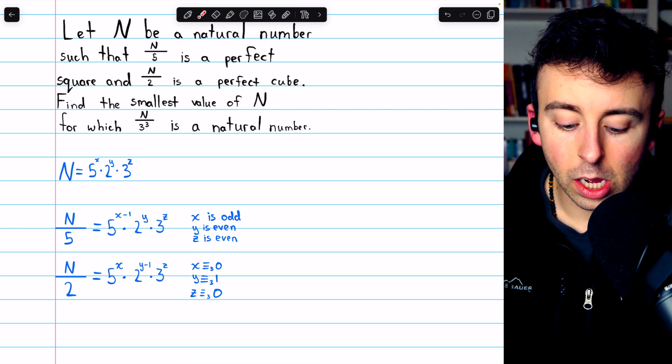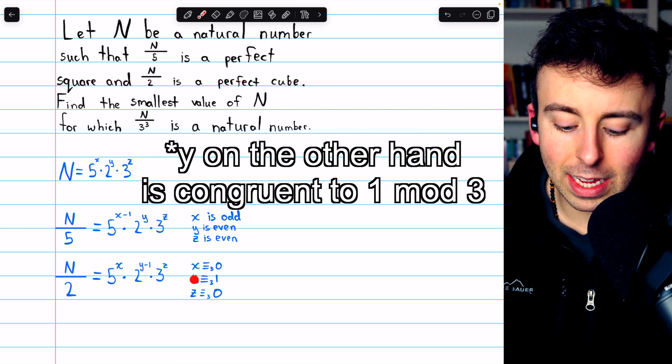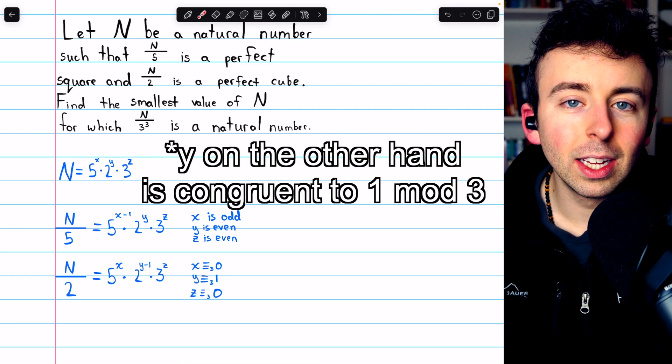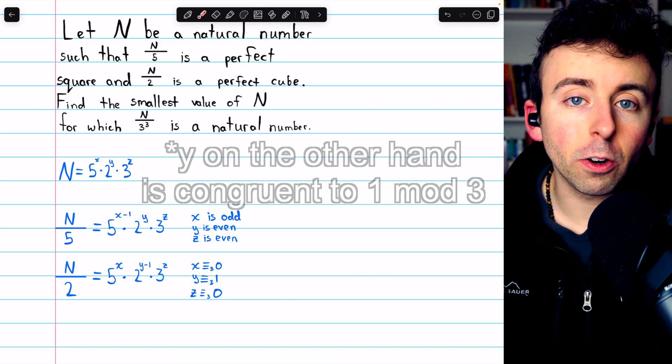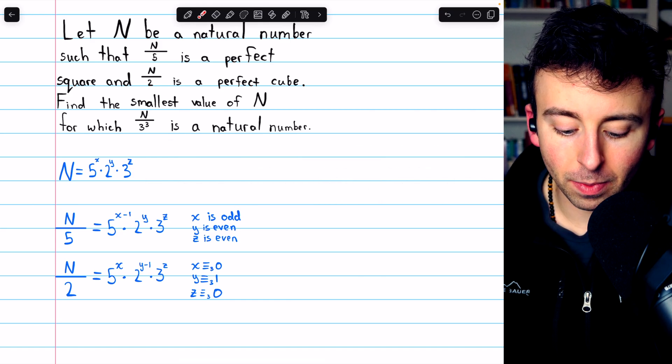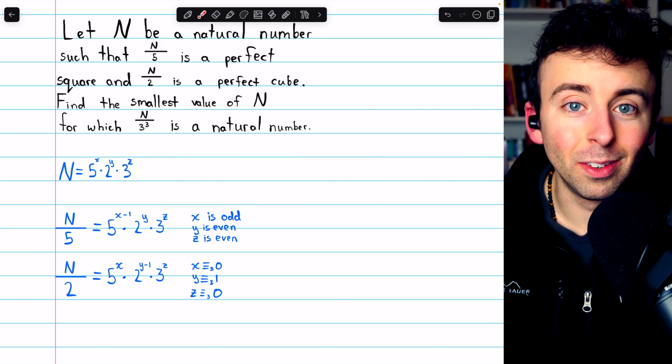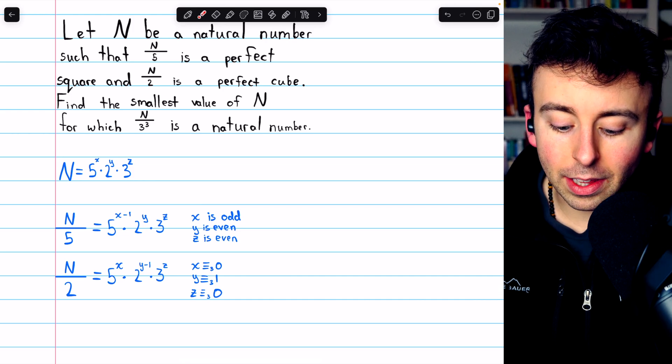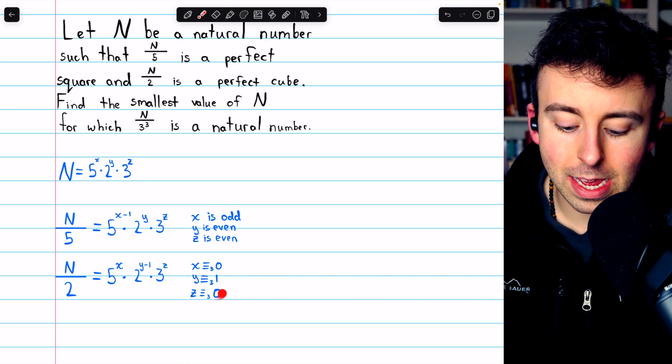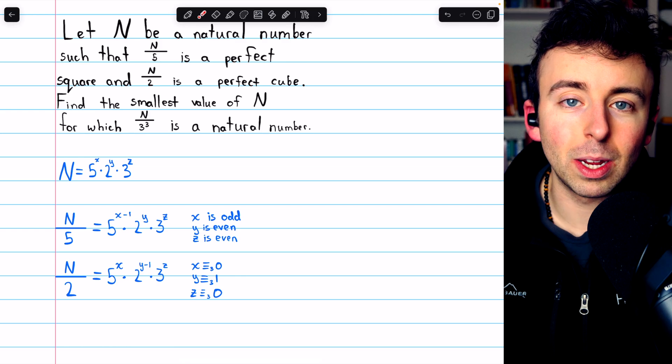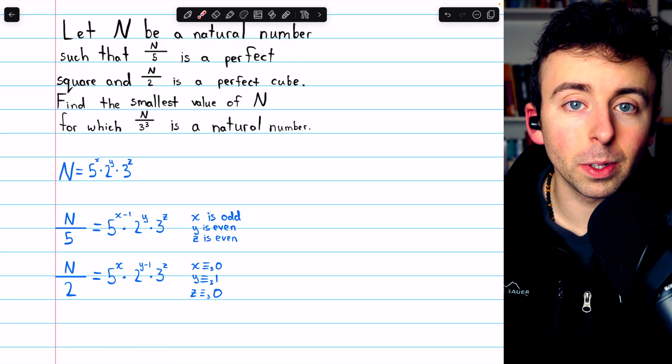y minus 1, on the other hand, must be congruent to 1 mod 3. This means it's 1 greater than a multiple of 3. That way, y minus 1 would be a multiple of 3. And then this power, z, must be congruent to 0 mod 3. It's got to be a multiple of 3.